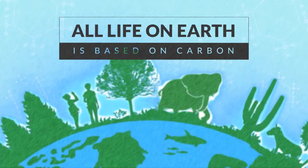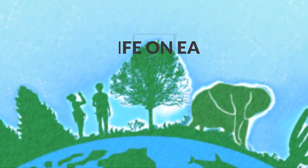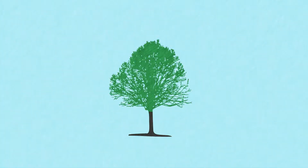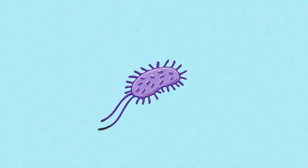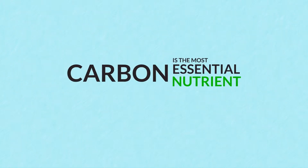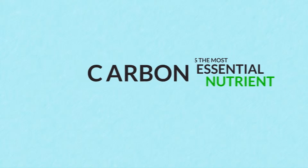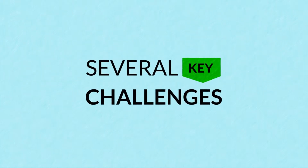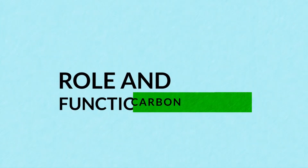All life on earth is based on carbon. Plants are 46 percent carbon, and bacteria are 50 percent carbon by weight. In fact, carbon is the most essential nutrient required by plants and microbes. There are several key challenges associated with carbon utilization. Let's review the role and function of carbon for plants and soils.